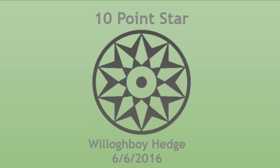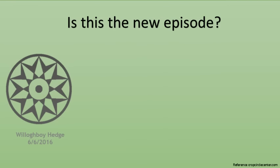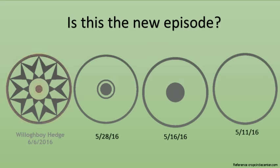The first crop circle I want to talk about is this circle which appeared in Willowboy Hedge. I want to talk about this one first, because it seemed to me what I expected would appear. Remember, I showed you in my last analysis the three Wiltshire crop circles from May 11th, May 16th, and May 28th. Reading these crop circles seemed like reading a comic strip. The story just got better and better, with more clues coming every several days.